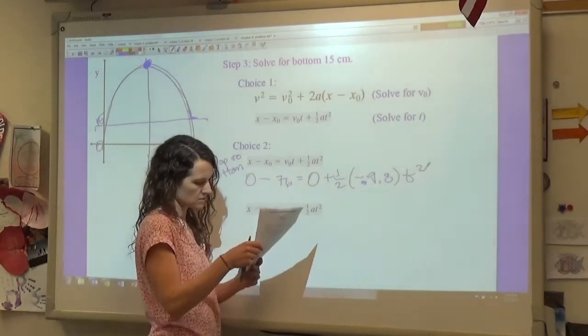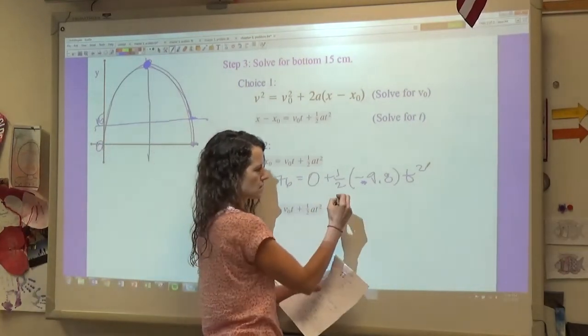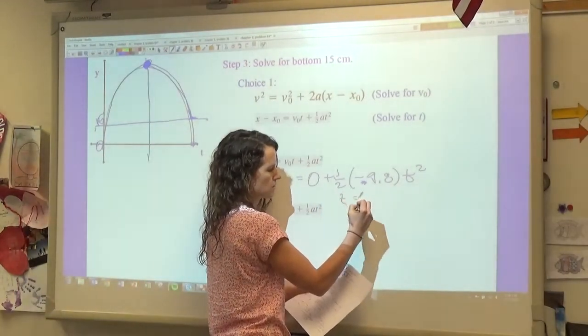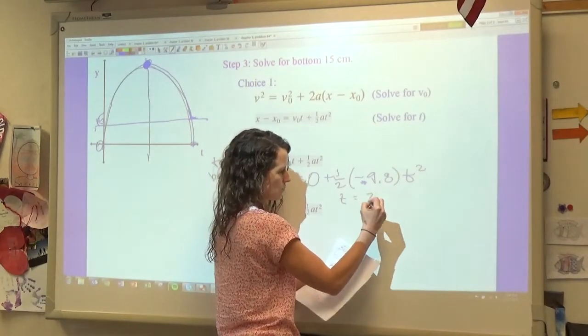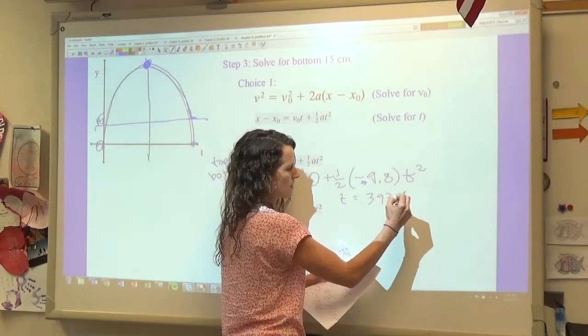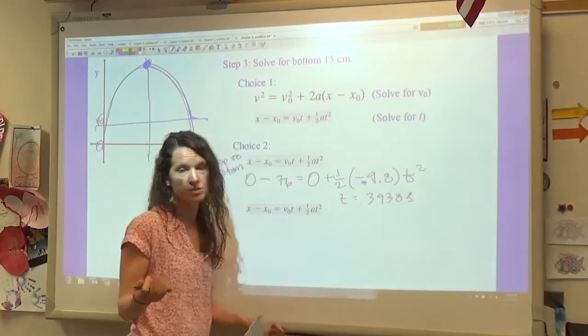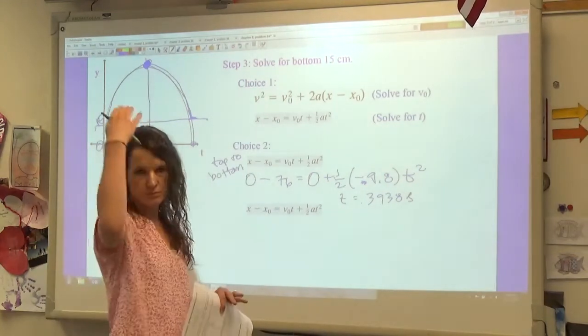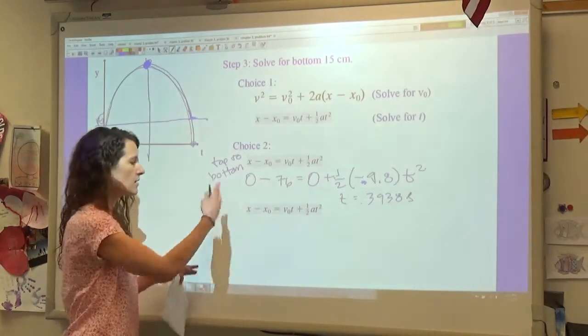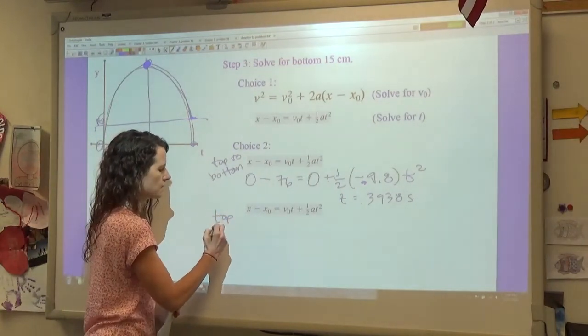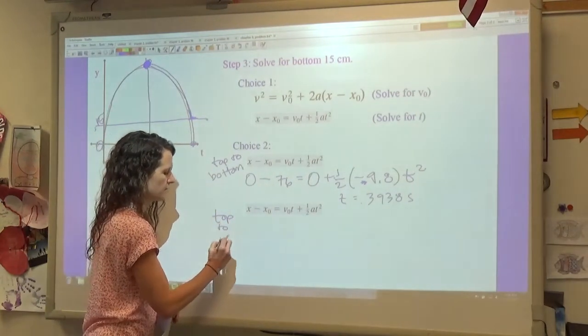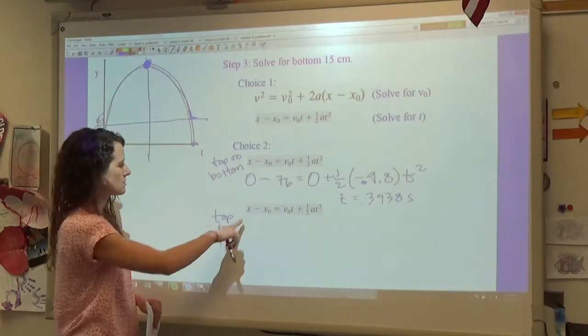So again, this is just how long it takes to go from here to here. And if I solve for this, I find out that my time is 0.3938 seconds. Now that's not my answer, that's just how long it takes for the player to go from the top to the bottom.